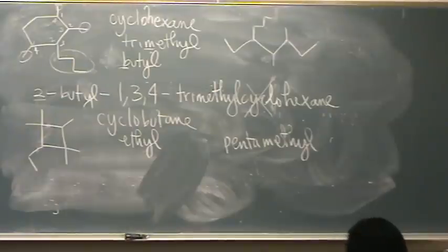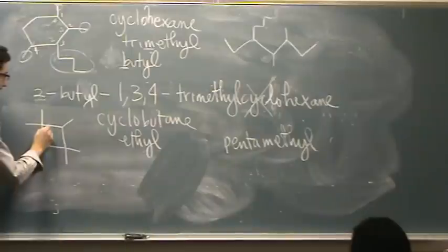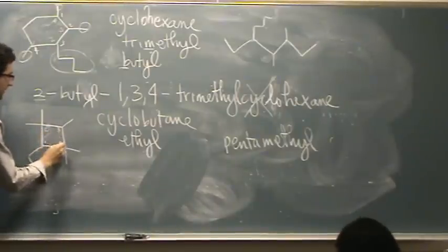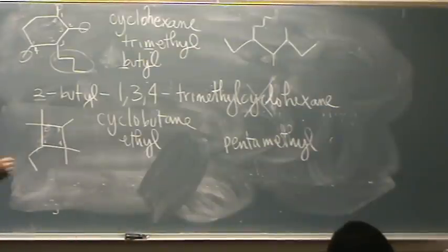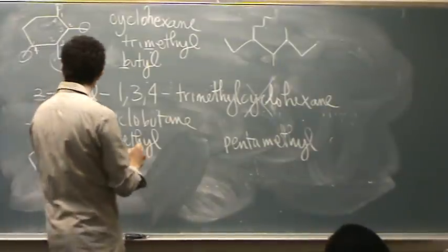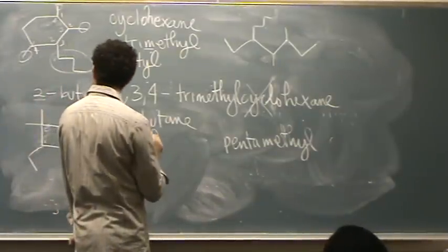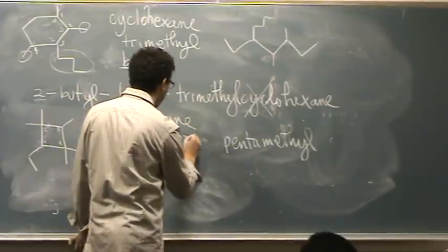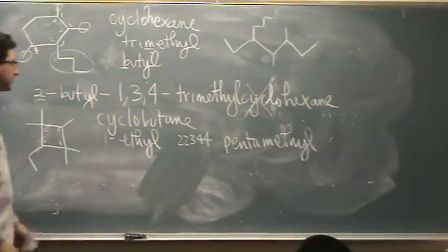Alright, and now the numbers. Where do you want to put number one? On the ethyl. You want to put it here? If we did that, that would give the ethyl one. The methyls would have two, two, three, four, four.